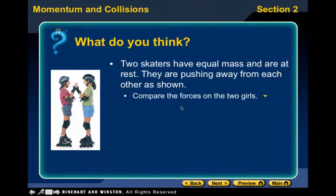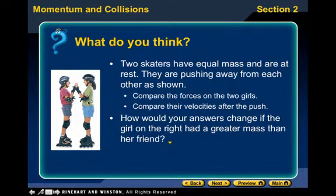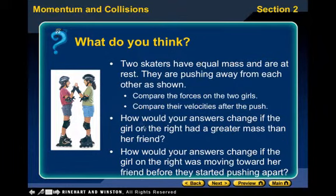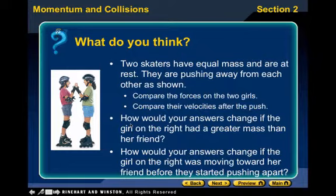Two skaters have equal mass and are at rest. They are pushing away from each other. Compare the forces on the two girls. If they have equal mass, their forces should be equal to each other, so the forces would be the same and their velocities would be the same. If the one on the right had greater mass, she'd be able to push with more force, moving the other one a little faster. And how would your answers change if the girl on the right was moving towards her friend before they started pushing apart? Think about those as we go through this.